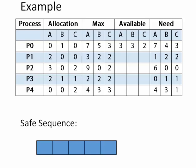We first check our available resources, which are 3 3 2. The need of process P0 is 7 4 3, but we only have available resources 3 3 2. It is clear that the need of P0 cannot be fulfilled because A requires 7 resources and we only have A equal to 3, so we move to the next process.